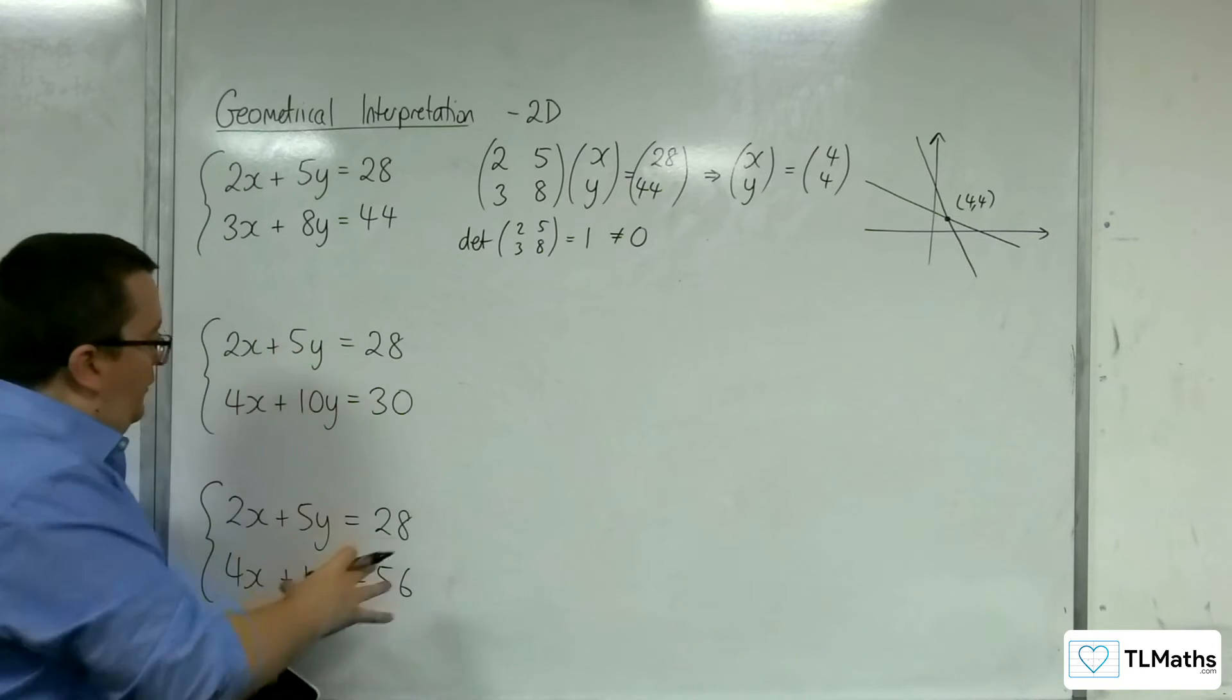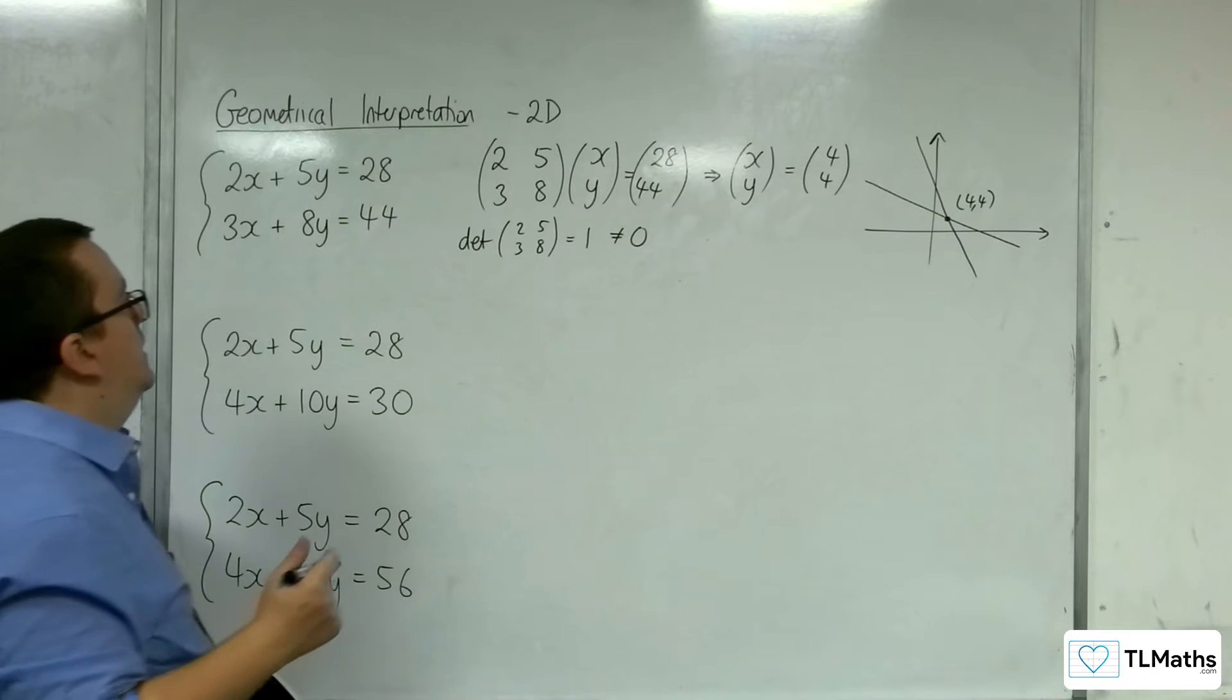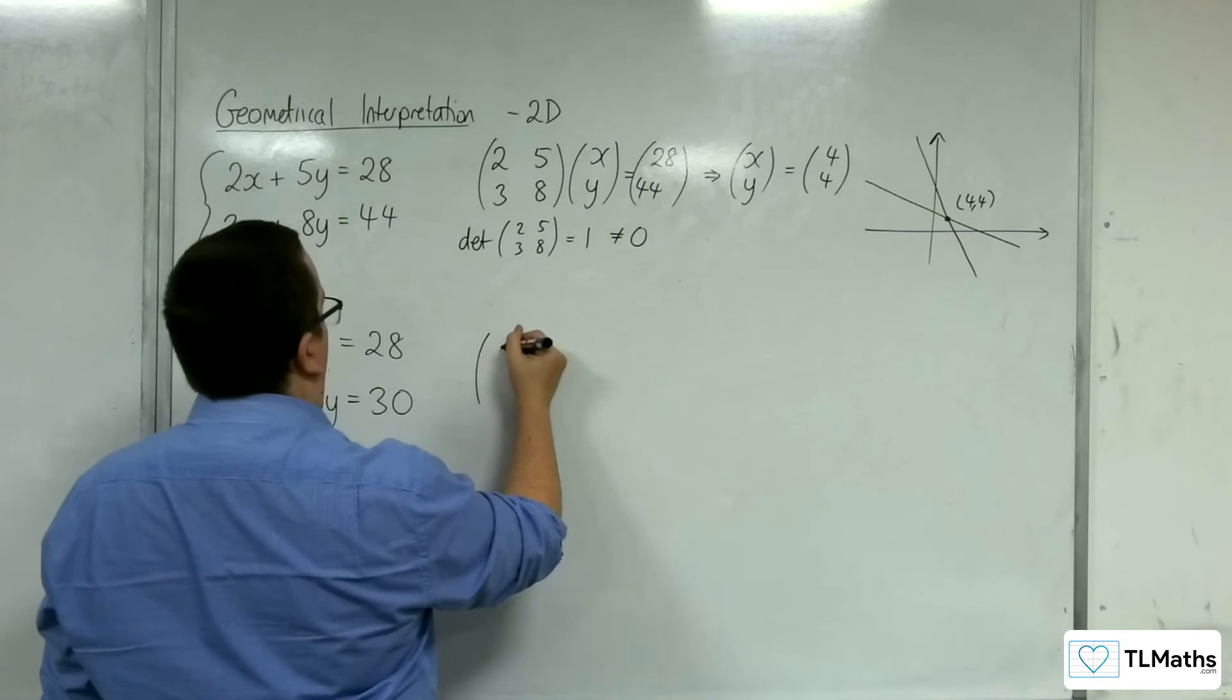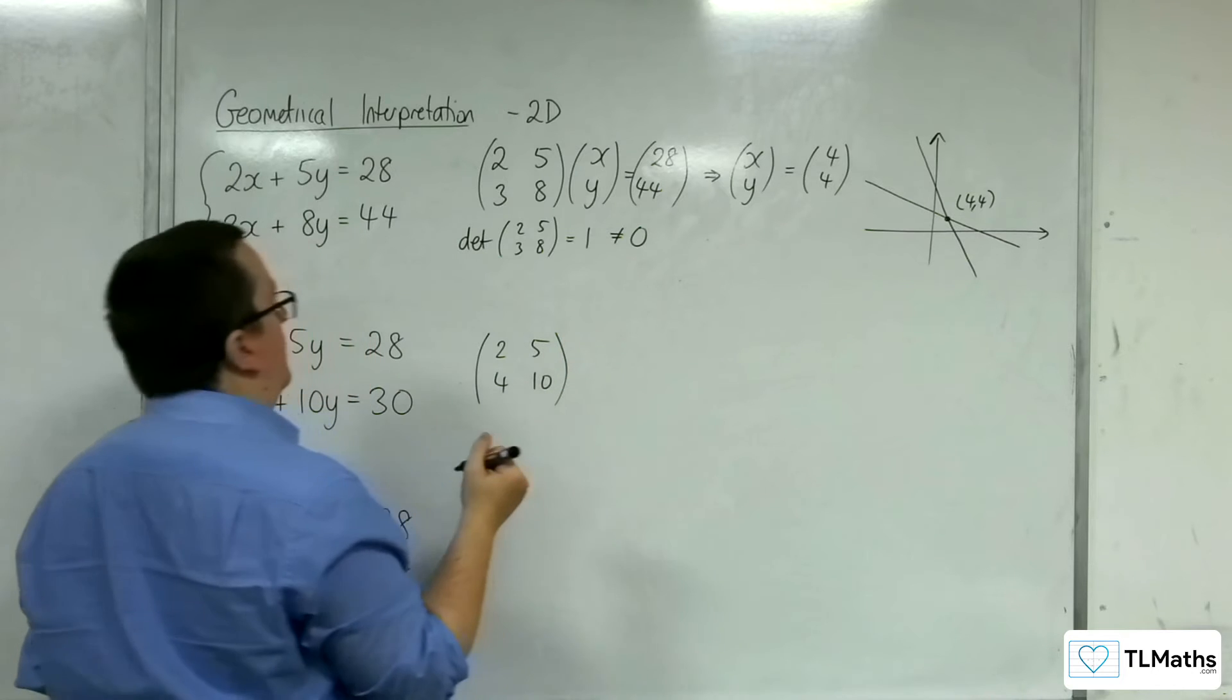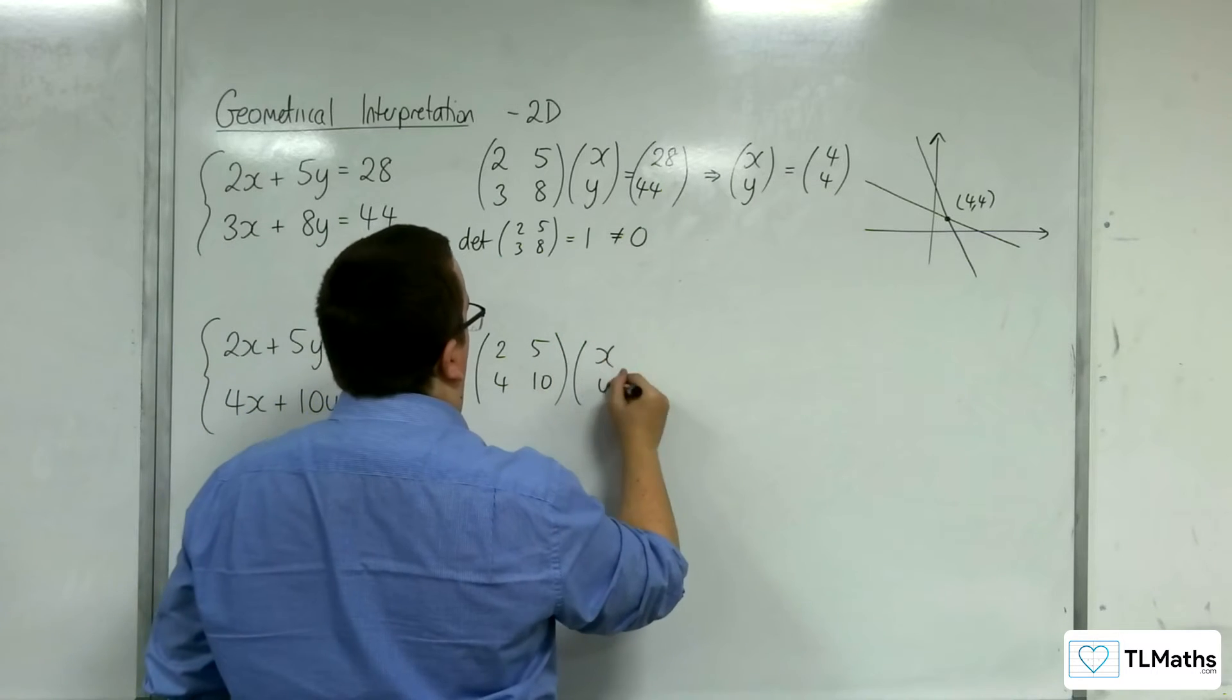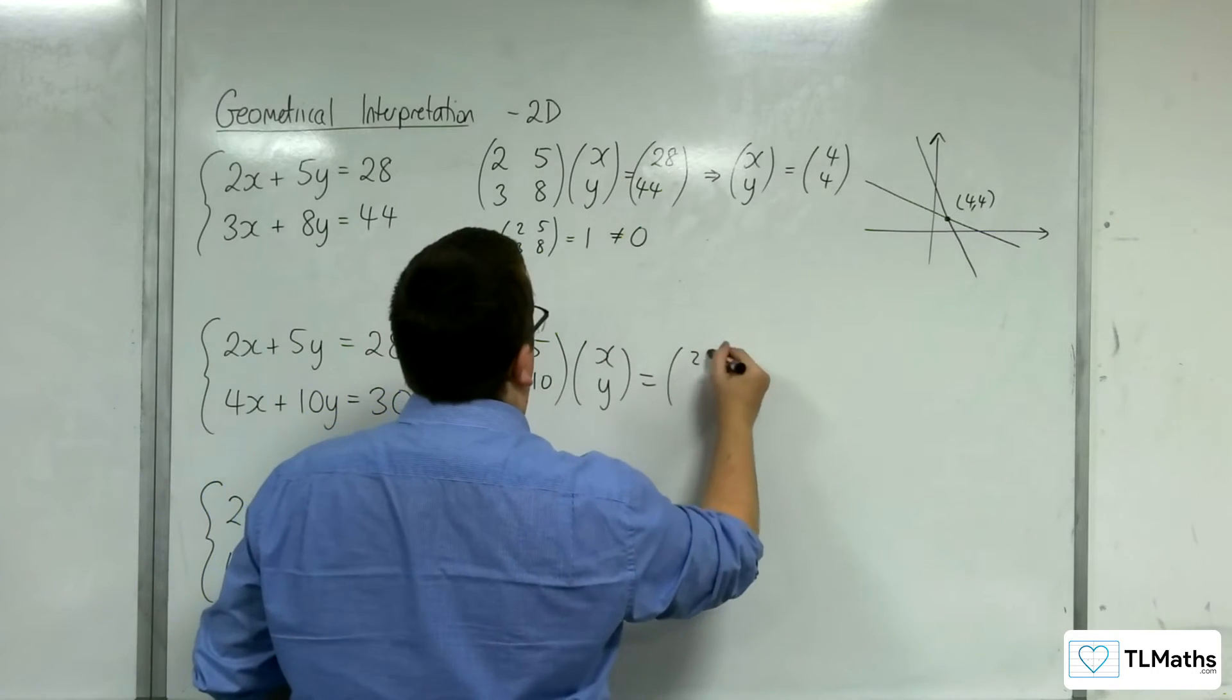Now, in these two situations, okay, let's have a look at this one. So we've got 2, 5, 4, 10. Okay. Multiplying with x, y is equal to 28, 30.